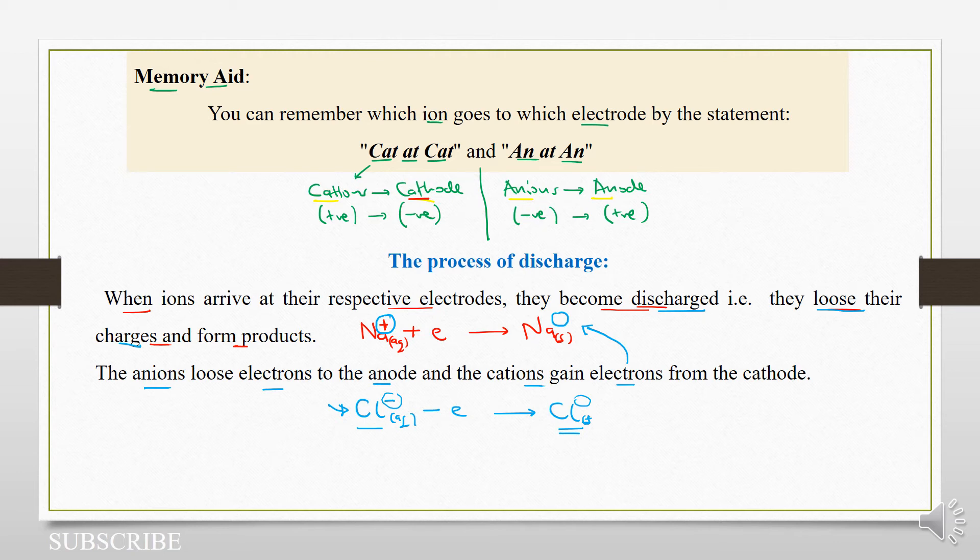So that's what we mean by the process of discharge — you lose your charge, that means you become an atom, and you're no longer an ion.